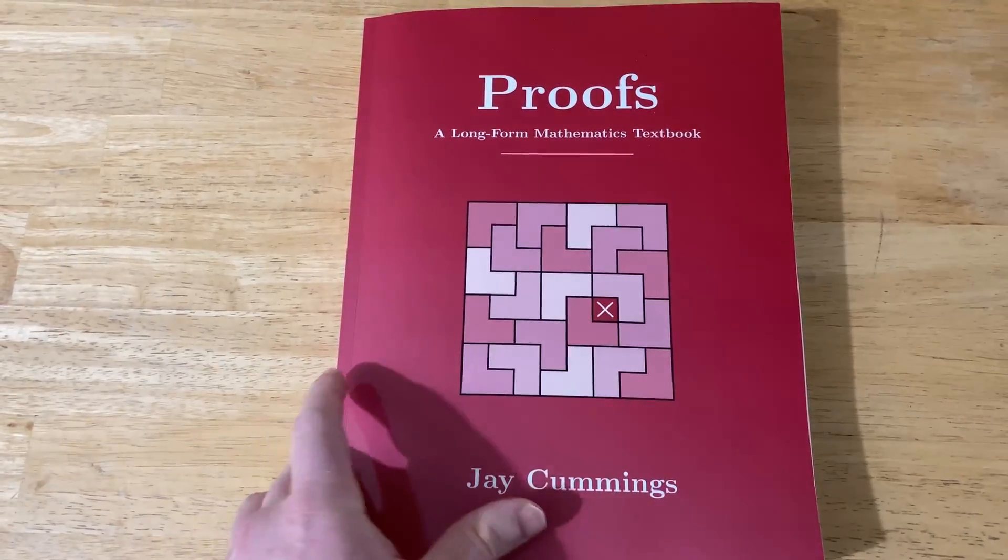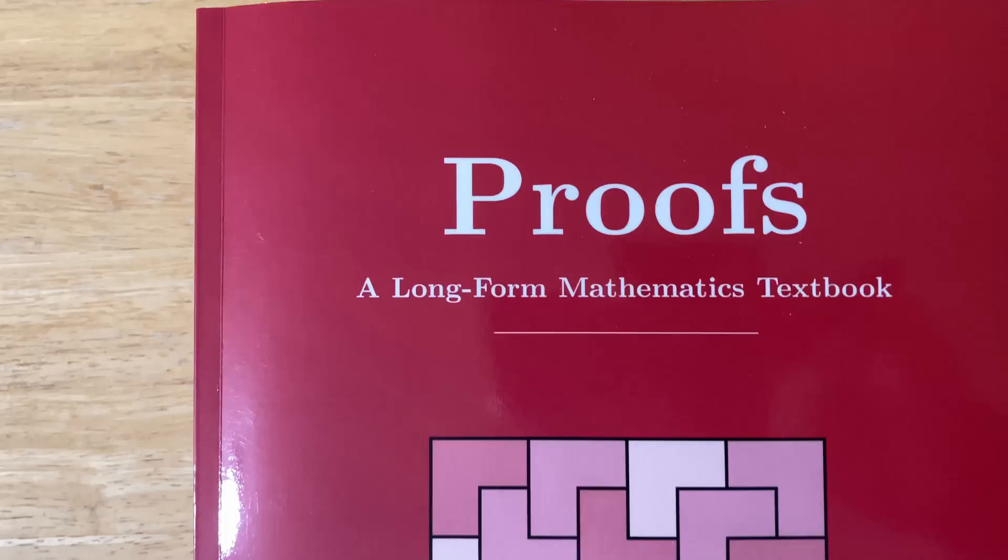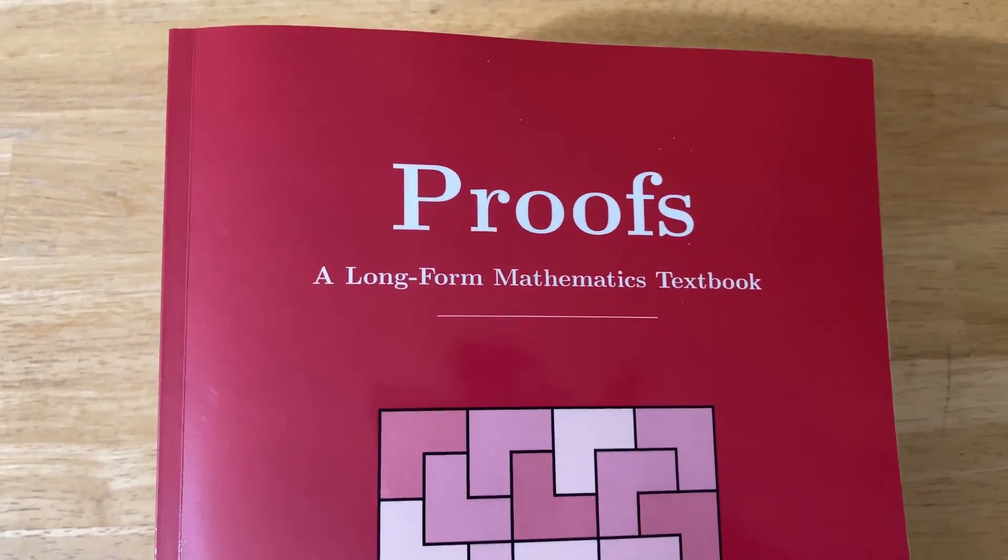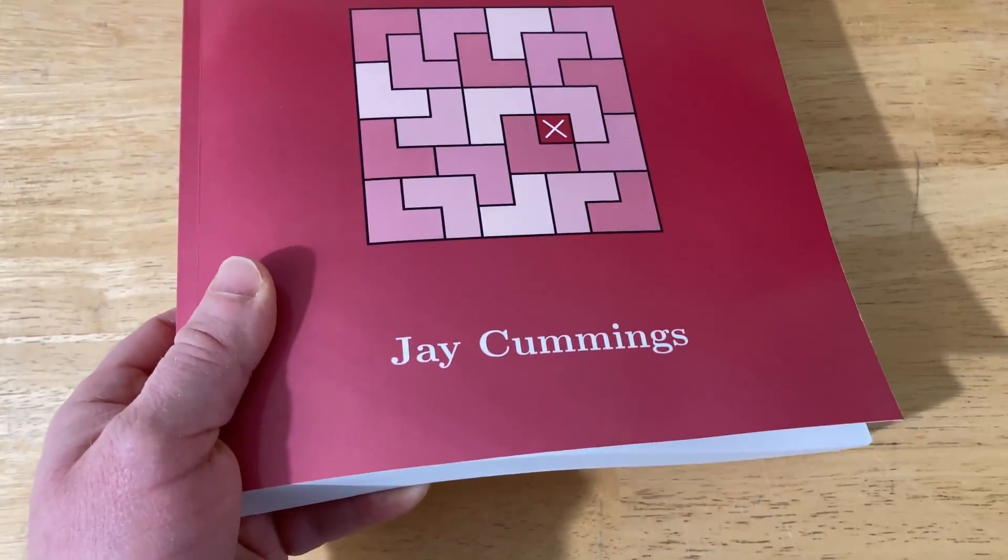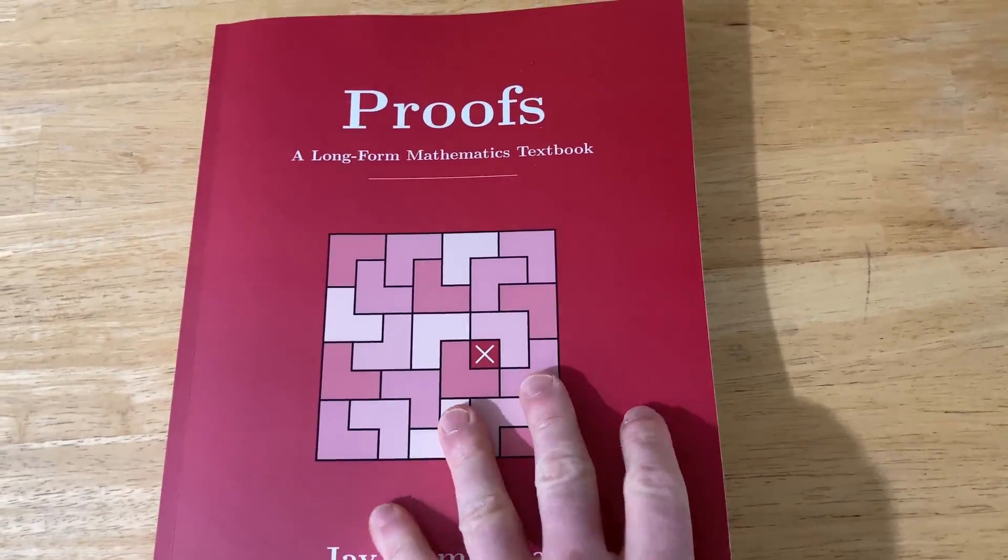What you see here is an incredibly excellent book on proof writing. This book is a masterpiece. It's called Proofs, a Long-Form Mathematics Textbook, and it's by Jay Cummings. In this video, I want to talk about what I think about this book.